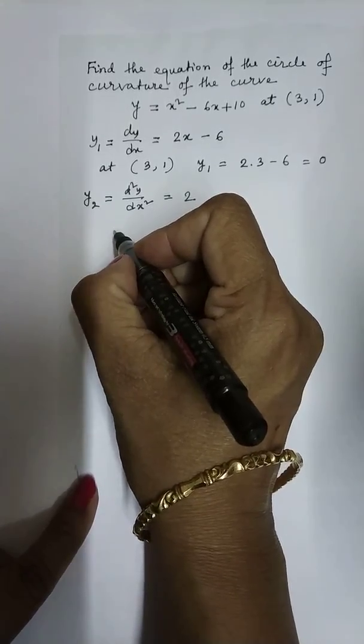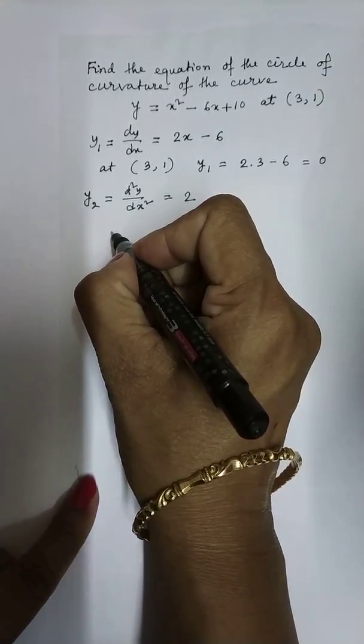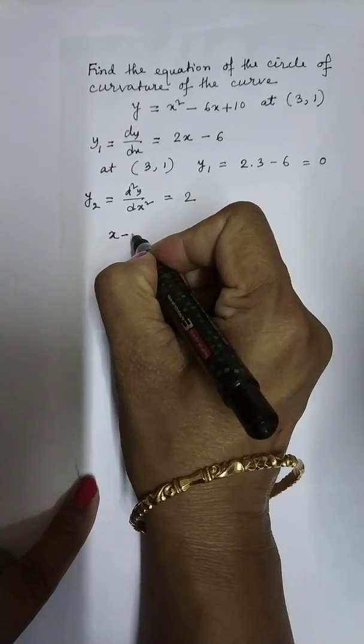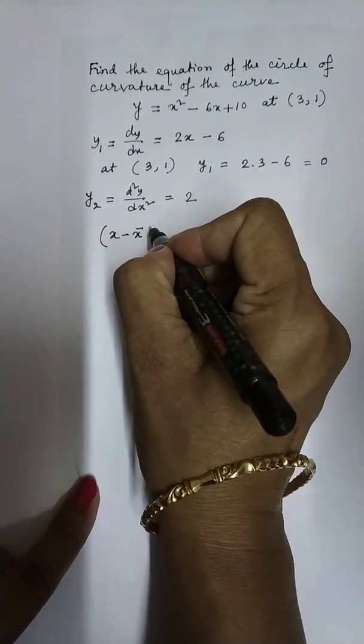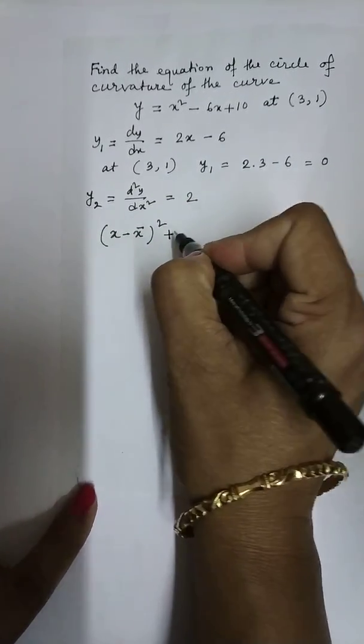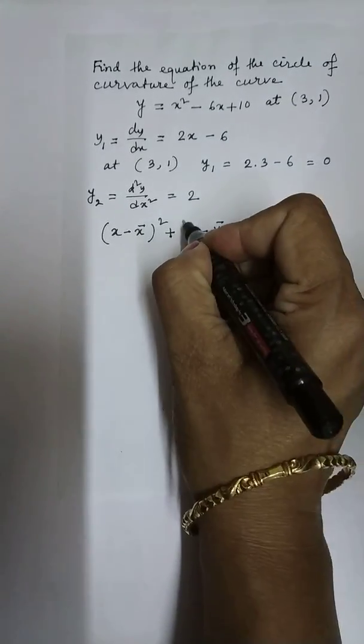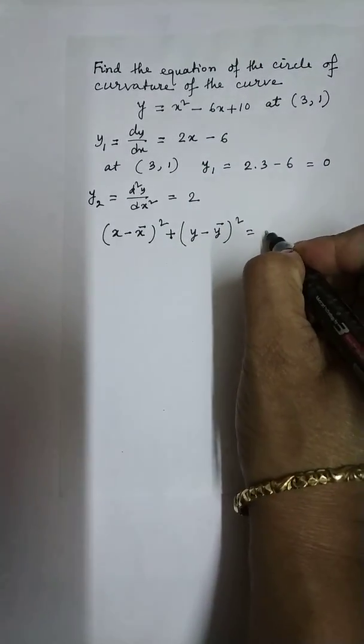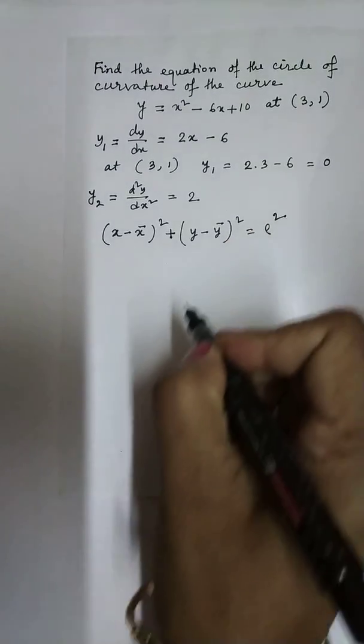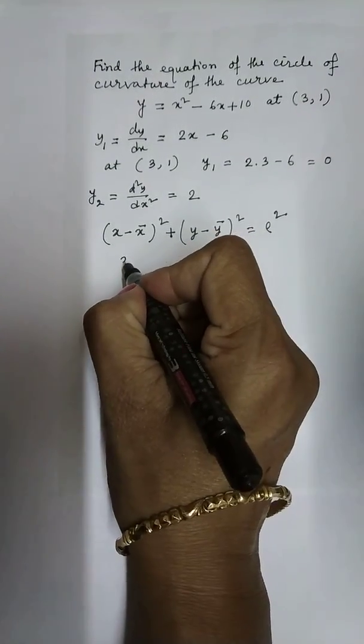Equation of circle of curvature is (x - x̄)² + (y - ȳ)² = ρ². So we have to find x̄.